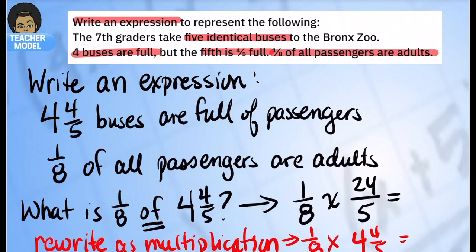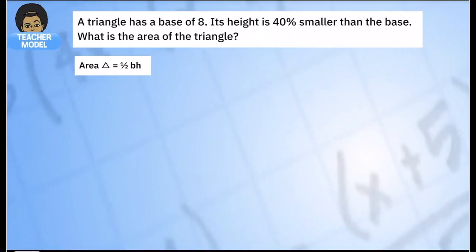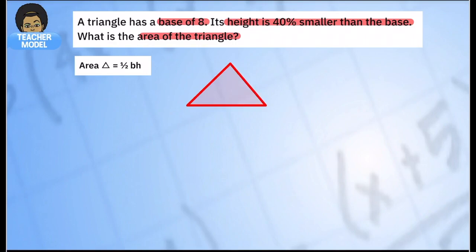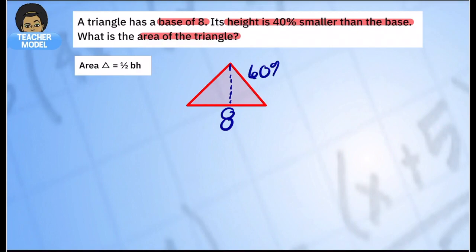Let's look at one more example. A triangle has a base of eight, and the height is forty percent smaller than the base. What is the area? We know the base is eight. Now, if something is forty percent smaller, it is sixty percent of the number — so sixty percent of the base is the height.